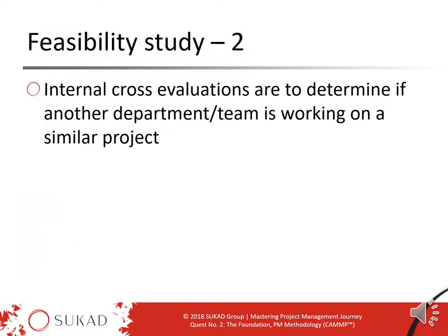The first factor is what we call internal cross-evaluation. In large organizations, large government ministries, and others, it is likely that more than one department or division could be working on the same type of project, resulting in wasted effort. So the first step is to verify whether any other division or branch is working on a similar project. If no, great — we can continue. If yes, we need to figure out what to do: maybe cancel one, or synergize and combine efforts. This is a simple exercise to ensure nothing else competes with this project.